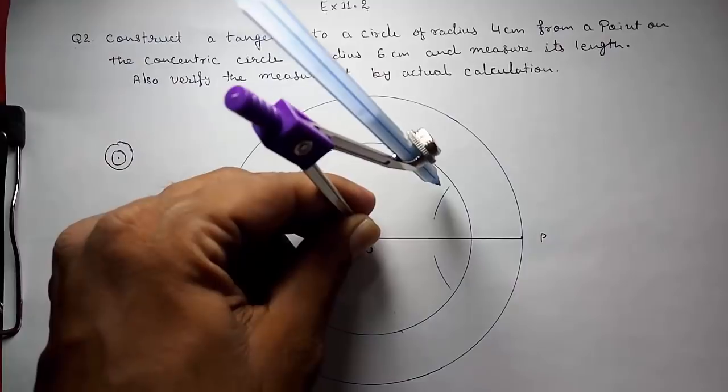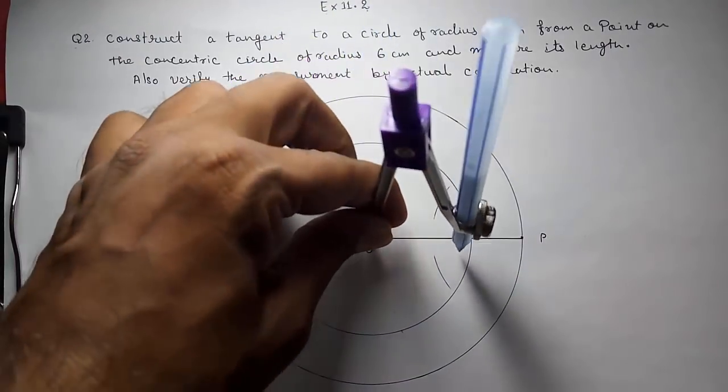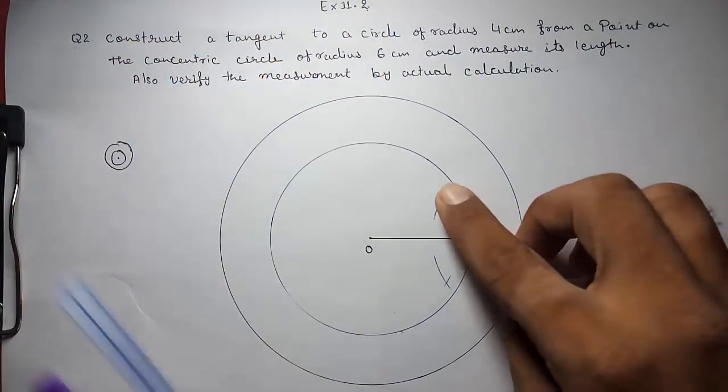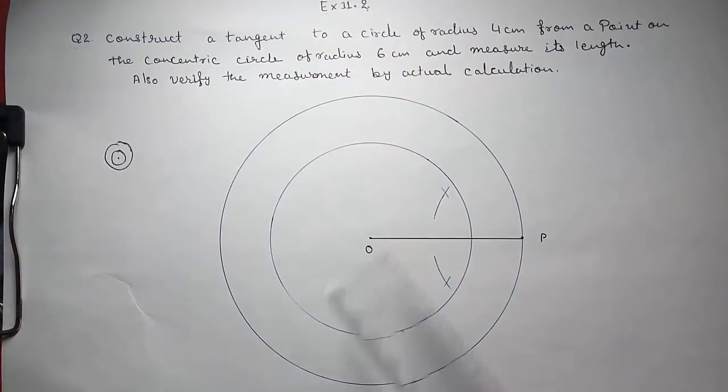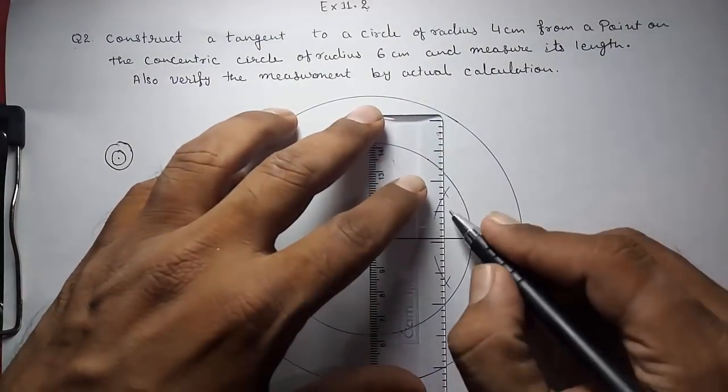For perpendicular bisector, from here also with the same measurement. You can see they are intersecting here. So with the help of that I am going to get the midpoint.